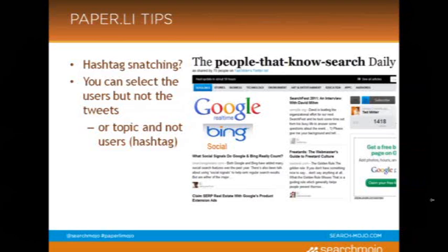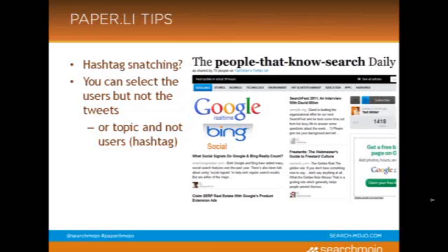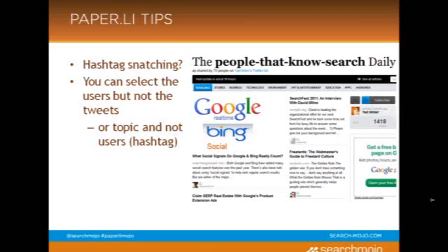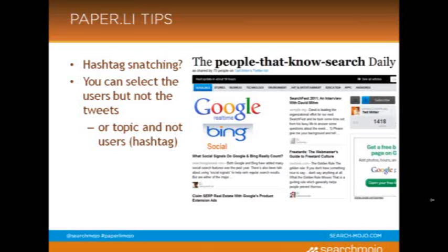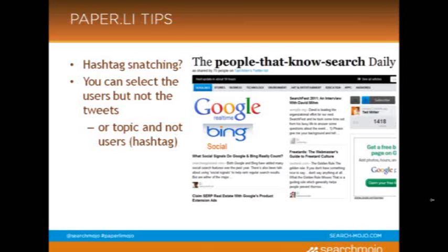Here are some extra tips. Keep in mind that anyone can create a Paper.li. So if I wanted to create a Paper.li from a hashtag that I've only watched, but don't necessarily own that hashtag or Twitter chat, I could create it. I actually saw this happen on Twitter this week. So just keep in mind that can happen, and don't necessarily be offended if someone uses your hashtag — they're just sharing content that would be shared on Twitter publicly anyway. Also keep in mind you can select the users but not the specific tweets if you're using a list, and you can choose the topics but not which tweets are selected.